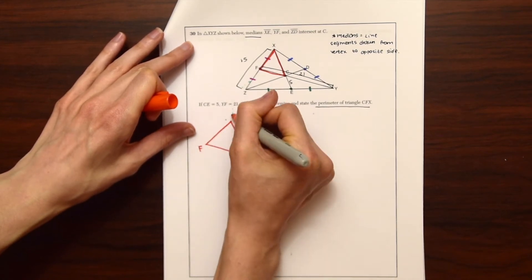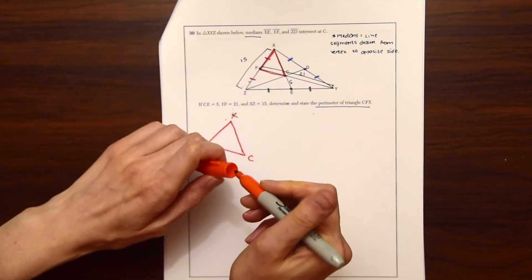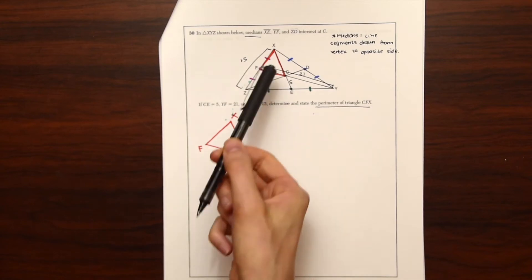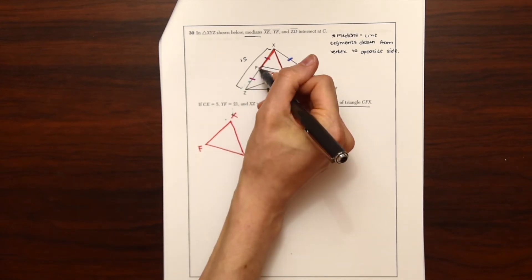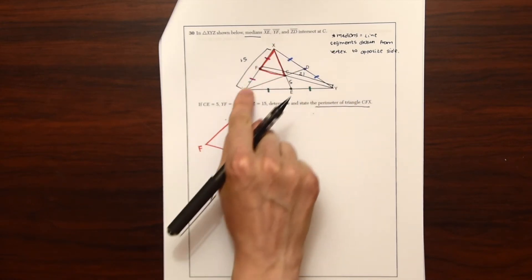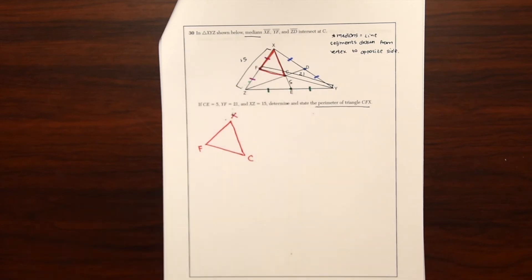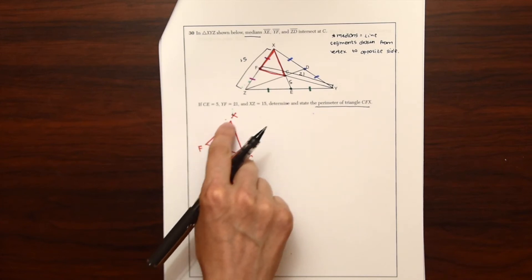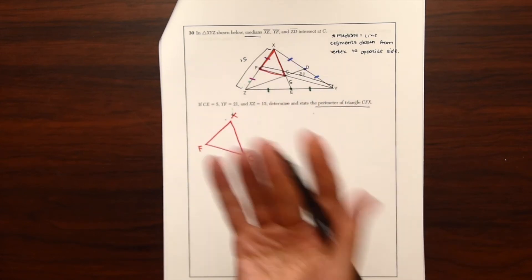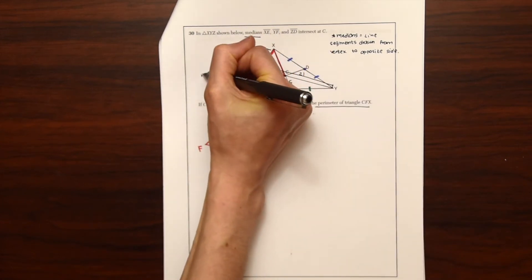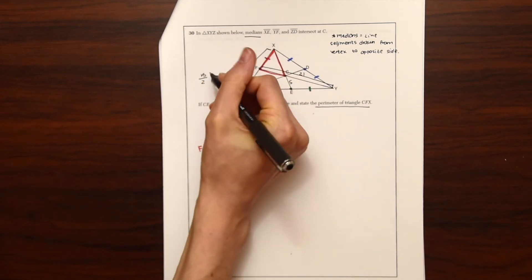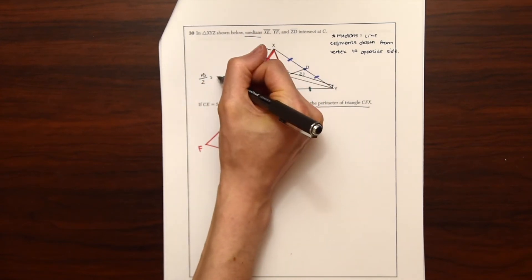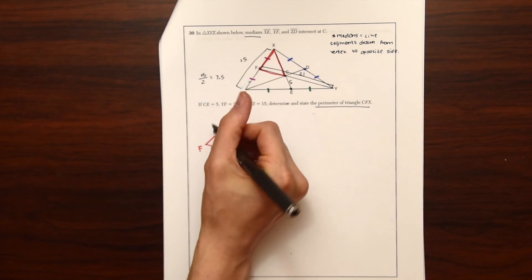So here's F, X, C. So since we know point F is the midpoint of this length XZ, and we know XZ is 15, we want to note the value of this segment FX right here, which we could just divide 15 divided by 2. So 15 divided by 2 is just going to be 7.5.